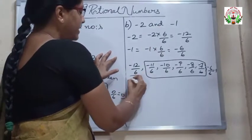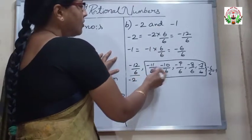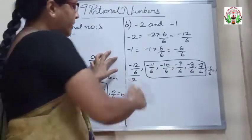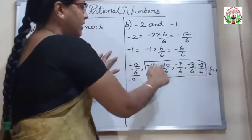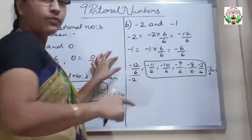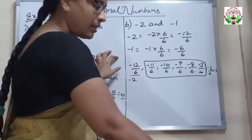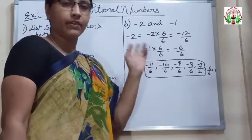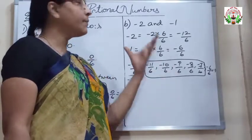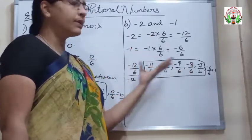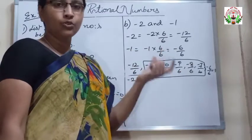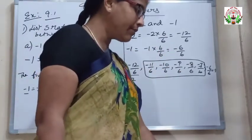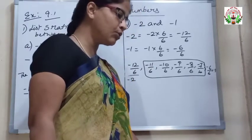Minus 12 by 6 is minus 2, so the 5 Rational Numbers between minus 2 and minus 1 are: minus 11 by 6, minus 10 by 6, minus 9 by 6, minus 8 by 6, and minus 7 by 6. That's 1, 2, 3, 4, 5 Rational Numbers. In this way, when 2 integers are given, whether positive or negative, we follow this procedure to find Rational Numbers between them.